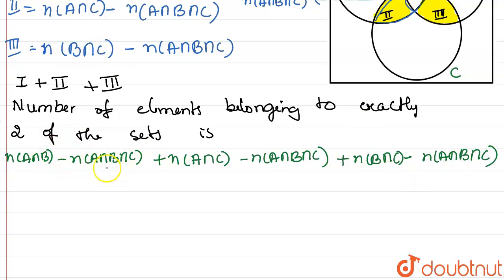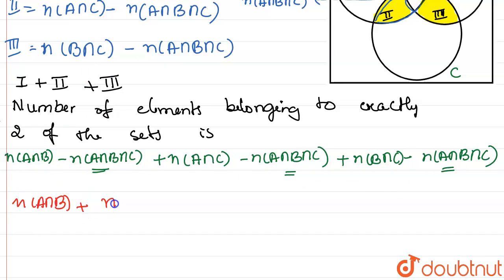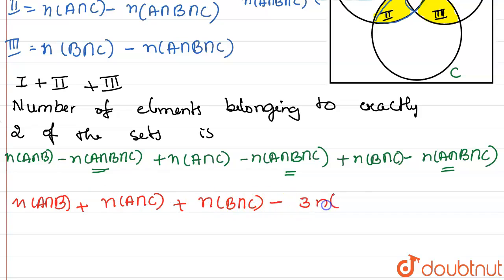Collecting the negative terms together, N(A∩B∩C) appears three times, so we write: N(A∩B) + N(A∩C) + N(B∩C) minus 3 times N(A∩B∩C). This is the answer for Statement 1, which is therefore true.